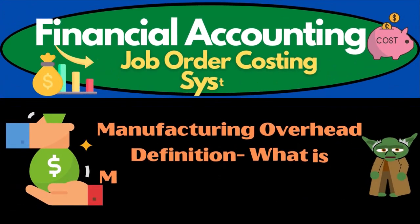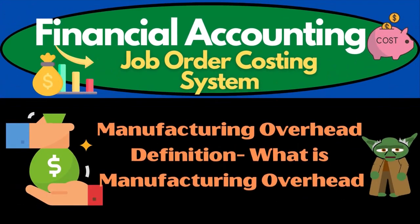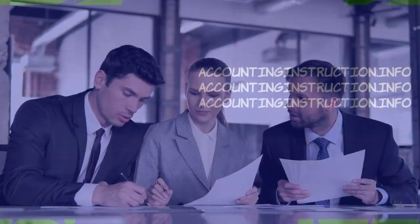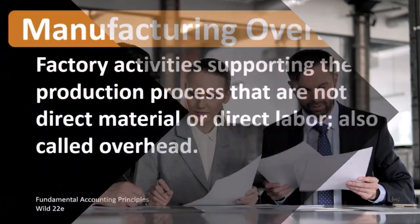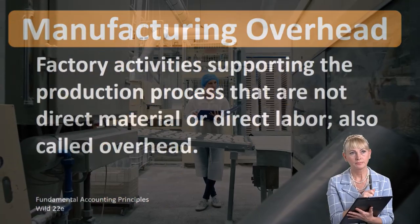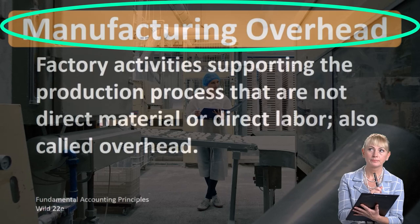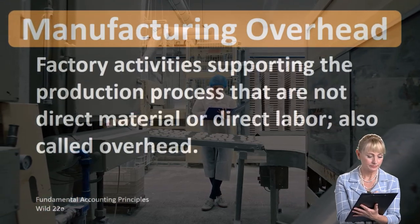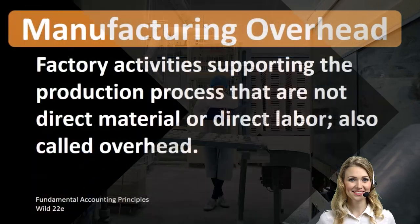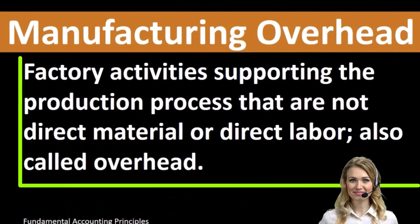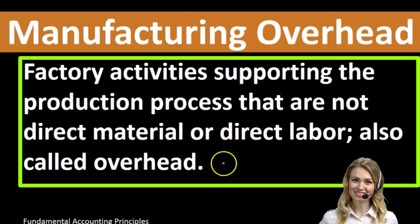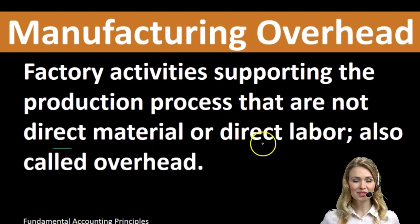Hello, in this lecture we will define manufacturing overhead. According to Fundamental Accounting Principles, WILD, 22nd edition, the definition of manufacturing overhead is factory activities supporting the production process that are not direct materials or direct labor, also called overhead. When we're thinking about manufacturing overhead, according to this definition, we are defining overhead by saying what it is not — it is not direct materials and it is not direct labor.